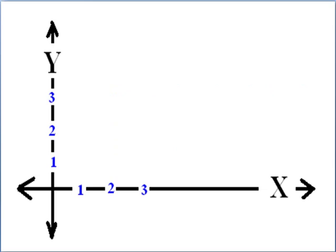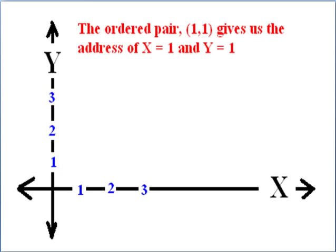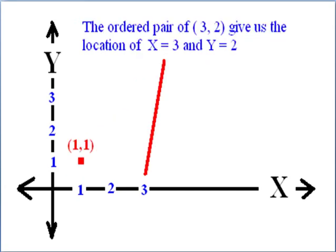Here we have the x direction with 1, 2, 3, and we have the y direction with positive 1, 2, 3. If we have the ordered pair (1, 1), it gives us the address where x is 1 and y is 1. That gives us the location (1, 1).